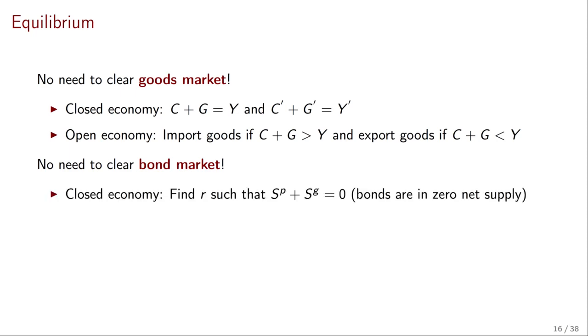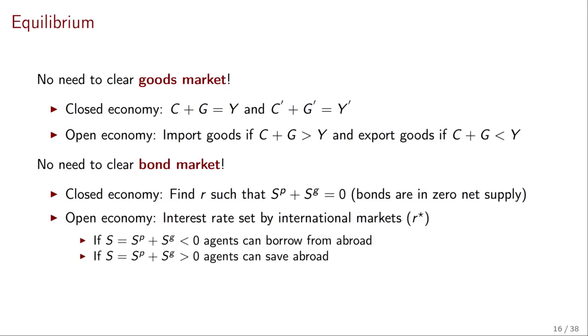In a similar way, we don't need to clear the bond market. We already alluded to this a couple of slides ago. In a closed economy, we needed to find some R in equilibrium such that the net amount of savings is equal to zero. So bonds or savings have to be zero because every time somebody is saving, it has to be borrowing to somebody else in the economy. So total savings have to be zero. In an open economy, this is not so because the interest rate is set by the international markets. This is the R star we mentioned before. And so if we have total national savings that are negative, agents can just borrow from abroad instead of borrowing from one another. If national savings are positive, then agents can save abroad.